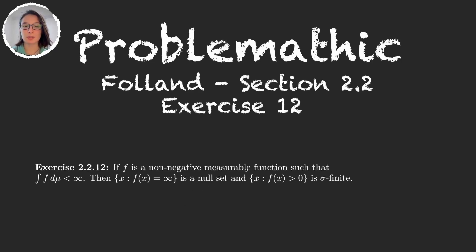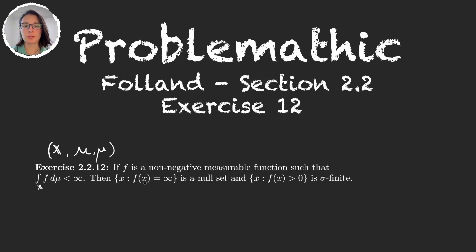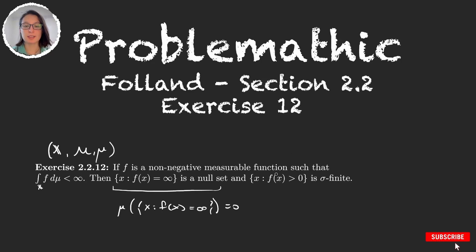We have f, a non-negative and measurable function, such that the integral over the entire space is finite. We are assuming that we're working on some measure space (X, M, μ). We have to prove that under this condition: first, the set of all points where the function is infinite is a null set — meaning μ of this set is zero — and second, that the set of all points where the function is positive is sigma-finite.